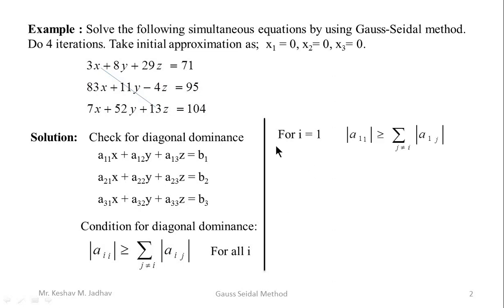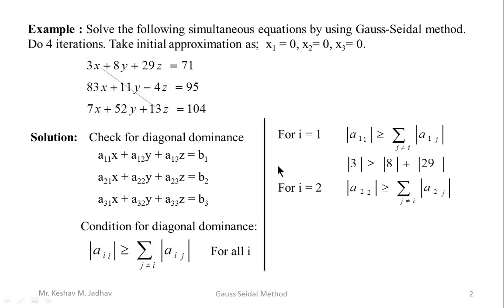For i = 1, a11 is 3, so 3 should be greater than or equal to the sum of 8 and 29 — but this condition is not satisfied. For i = 2, a22 is 11, so 11 should be greater than or equal to the sum of 83 and 4 — this condition is also not satisfied.